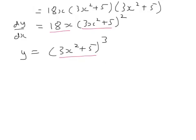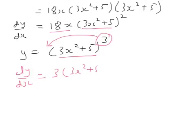But where does that 18x come from? Well, normally, if you differentiate, the power comes down and gets multiplied in front. So you would think that if y is 3x squared plus 5 cubed, you would think that dy by dx would be 3 lots of 3x squared plus 5 squared. You'd think that the number comes down in front of the bracket, and the power of the bracket gets reduced by 1. But it's not.